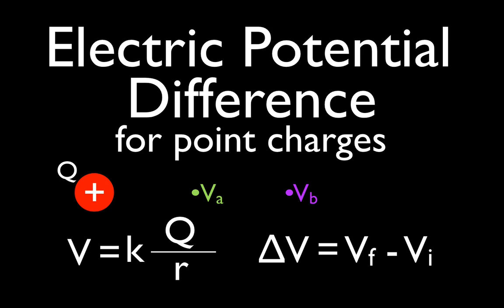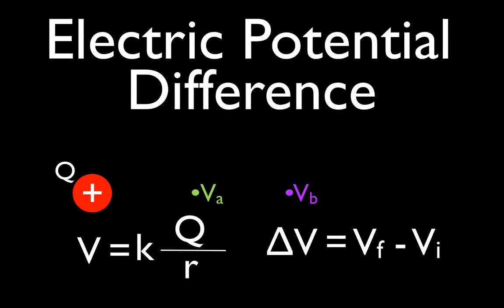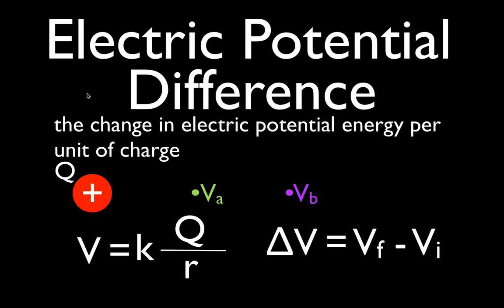In today's video we are going to go over electric potential difference for point charges. In the previous video we went over what electric potential is, and we said that electric potential is the electric potential energy per unit of charge. This video is about electric potential difference, and the definition for that is simply the change in electric potential energy per unit of charge as we move that charge from one location to another location around our central charge particle that is creating the potential.